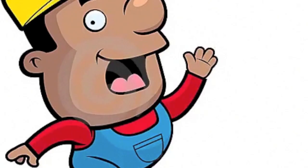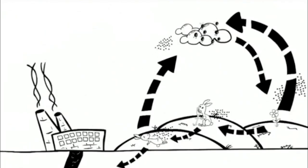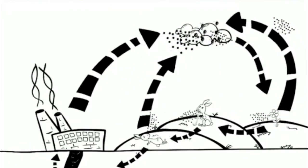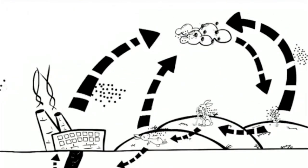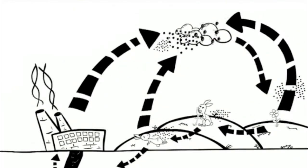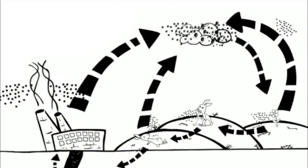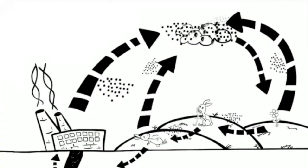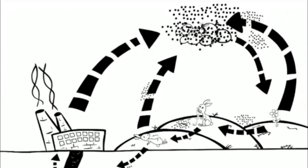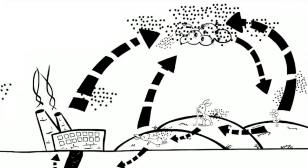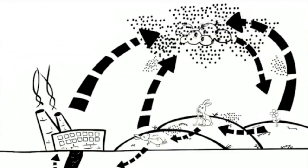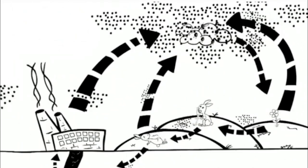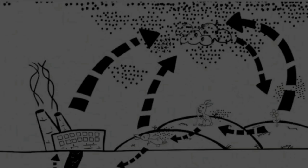But then humans came into the picture. Factories and vehicles also produce carbon dioxide, which ends up releasing carbon dioxide into the atmosphere where it builds up. This is how the greenhouse gas effect is caused. The rest of the carbon is cycled throughout the carbon cycle again and again.